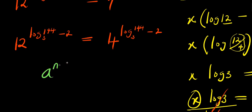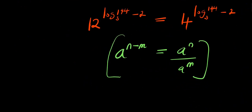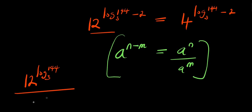Remember that a to the power of (n minus m) equals a to the power n divided by a to the power m. So we apply this to separate the exponents with log 144 to the base of 3.